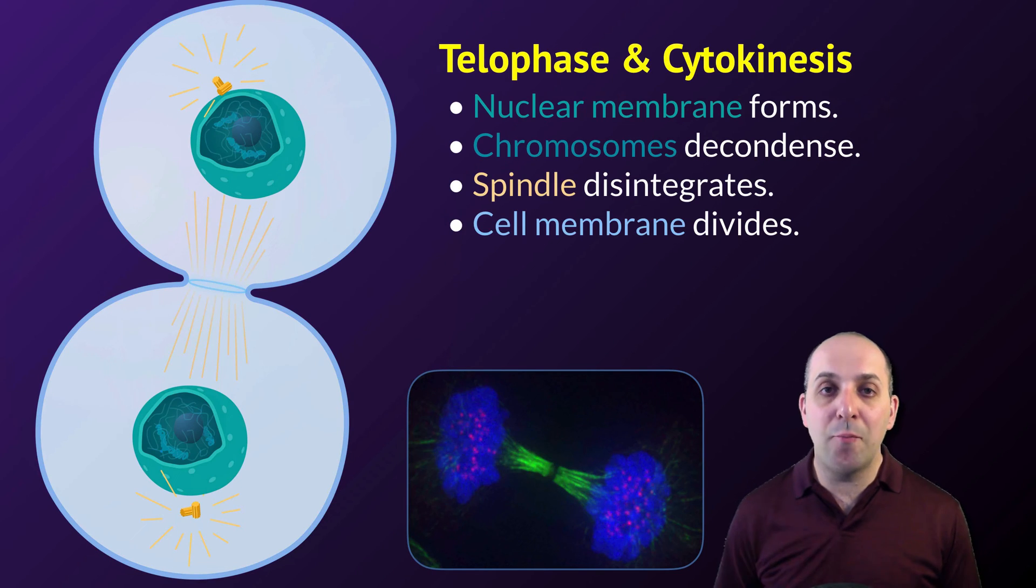In telophase, the nuclear membrane is going to form again around the chromosomes at each pole of the cell. The chromosomes are going to begin decondensing back to the chromatin state in which they'll exist during interphase. The spindle will disintegrate, and the cell membrane will divide during the final step, which is known as cytokinesis.